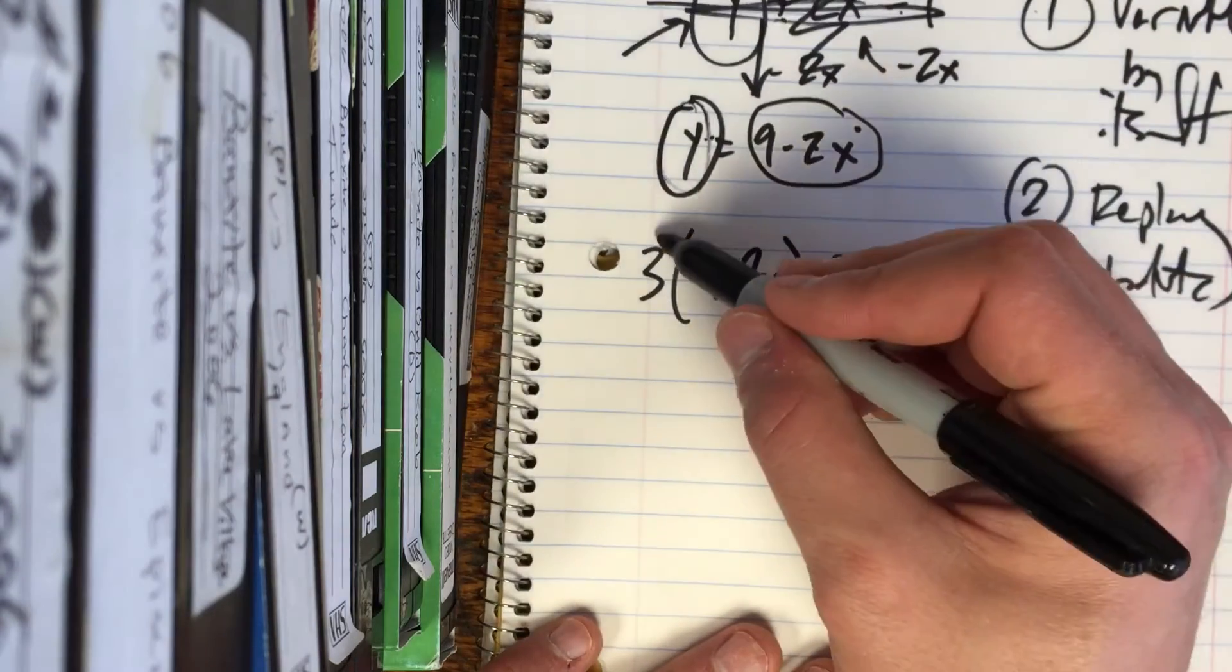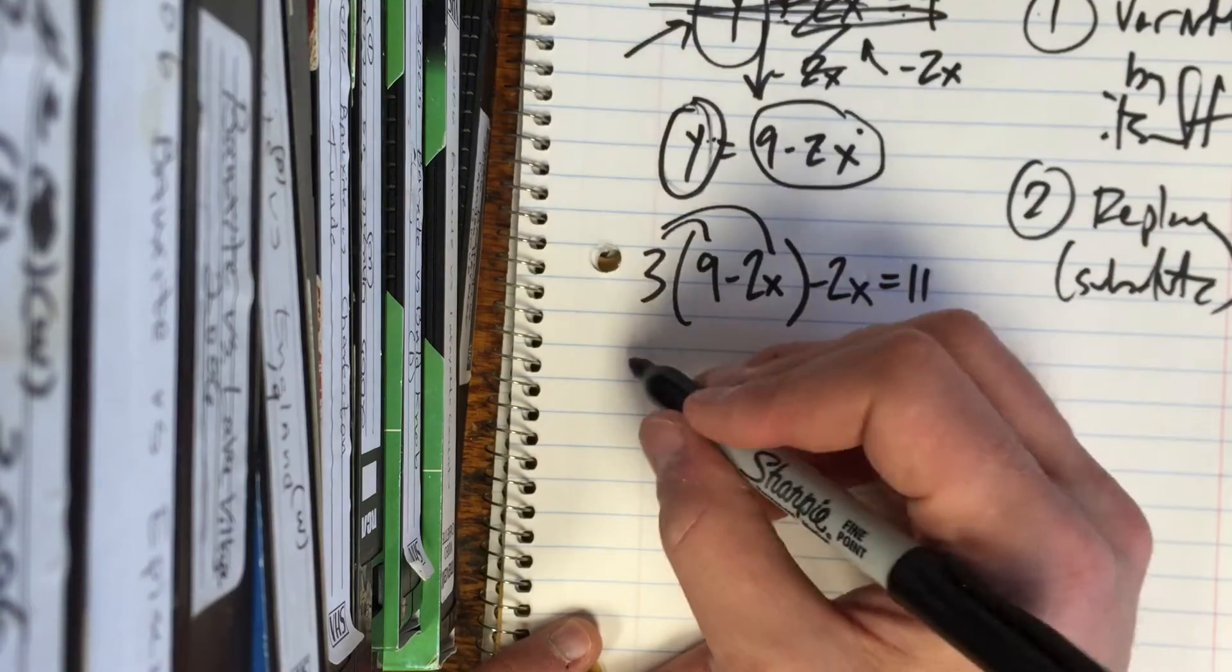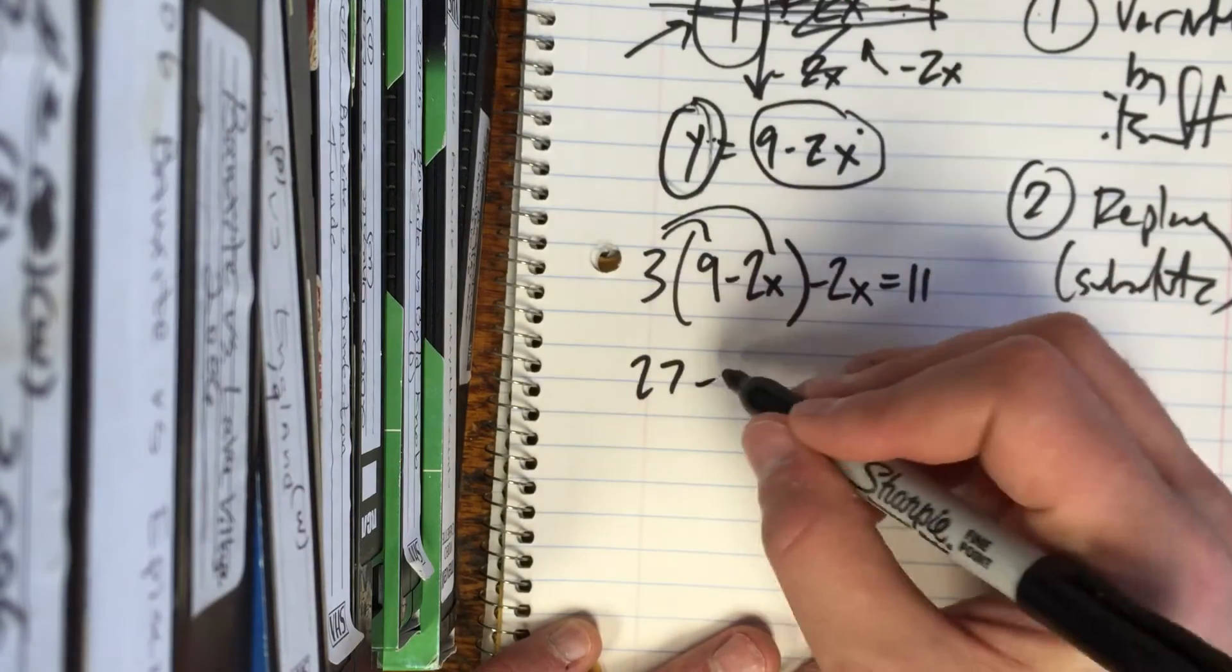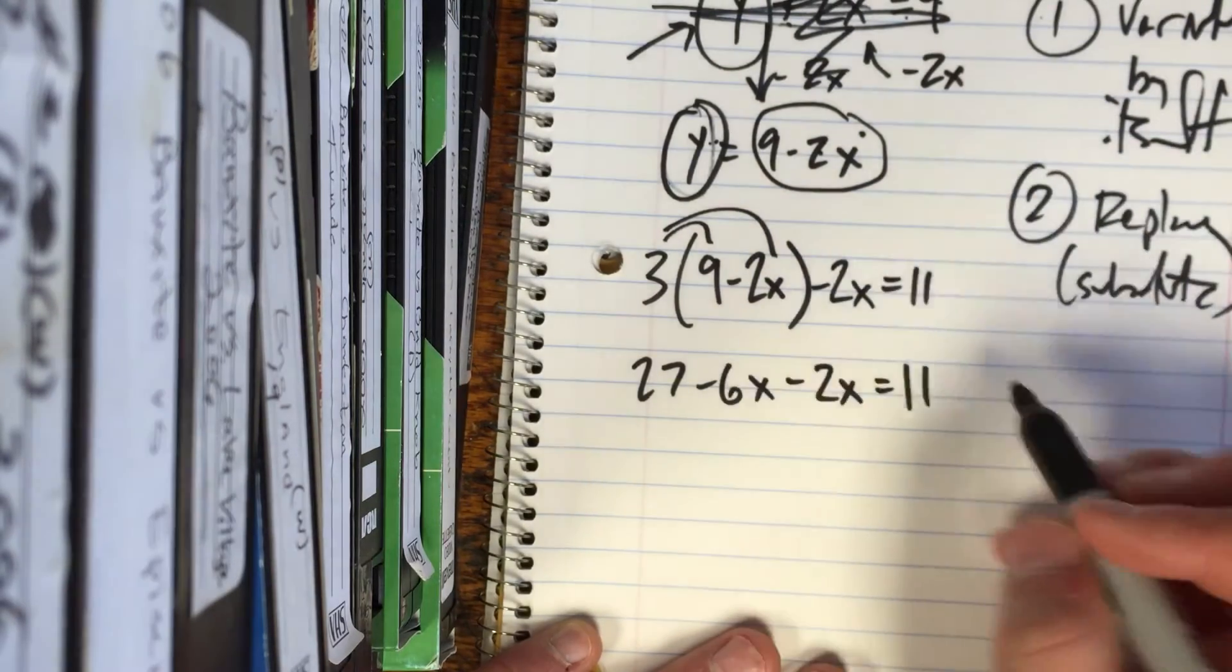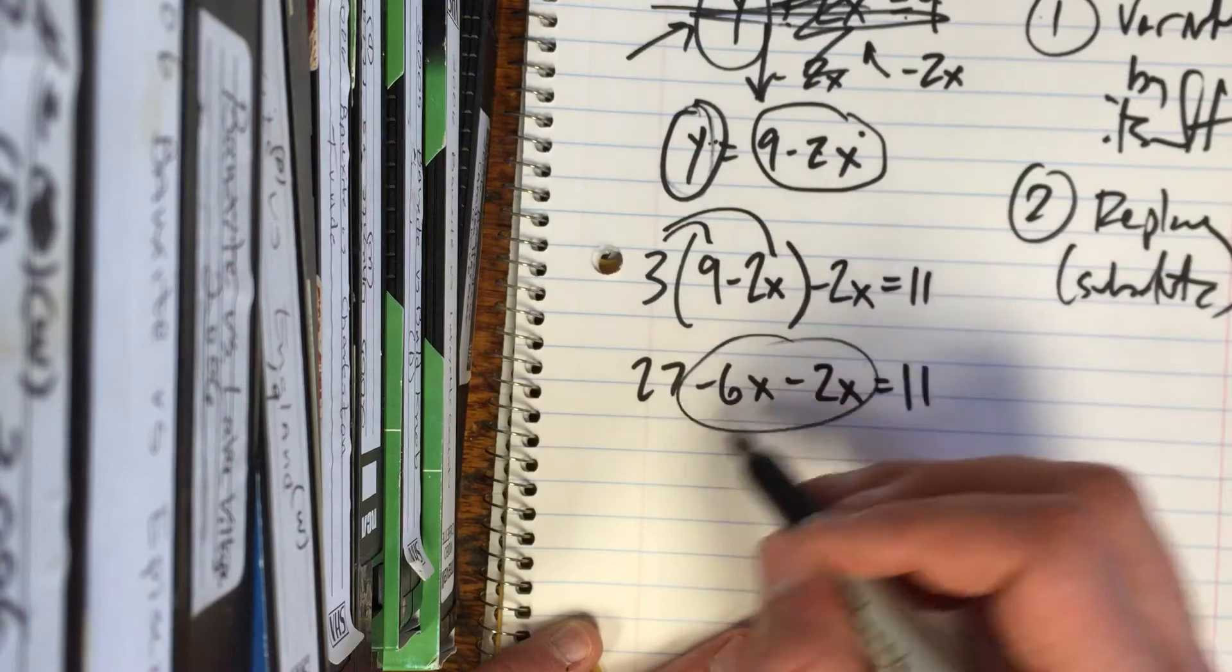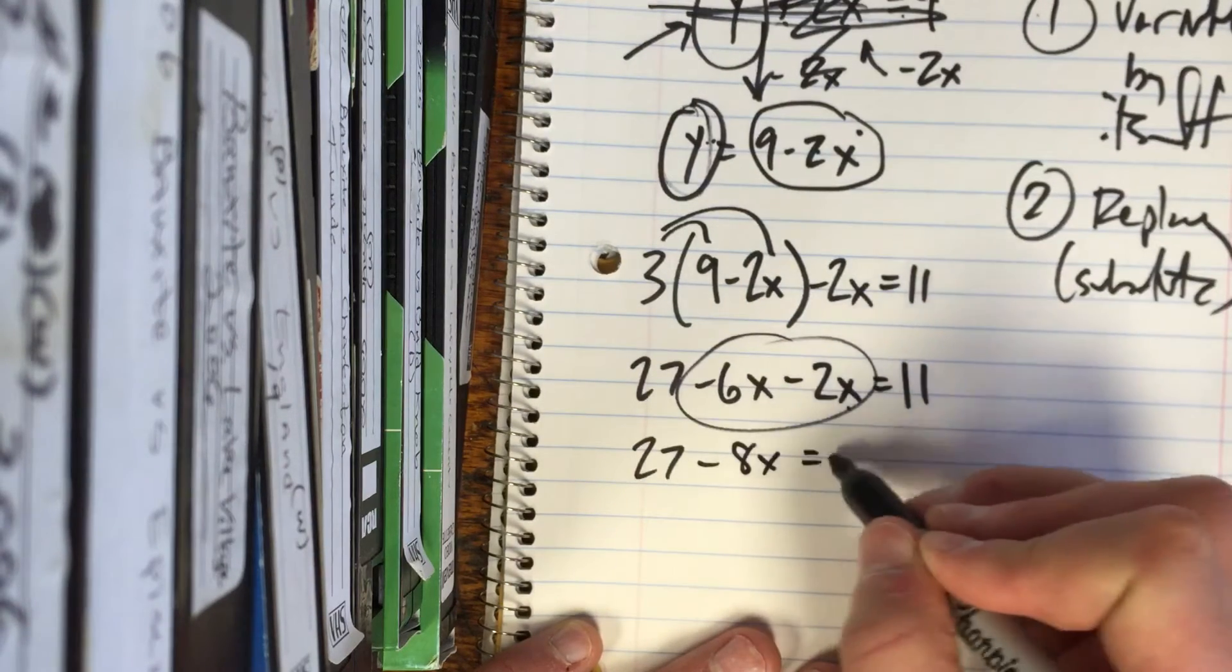Now we just solve it. We know, just distribute that, distribution. So 3 times 9 is 27, minus 6x. Everything else, bring it down. Don't leave anything out. That's a good way to mess up. We combine our like terms, 27 comes down, that'd be negative 8x equals 11.